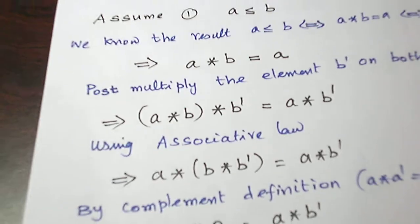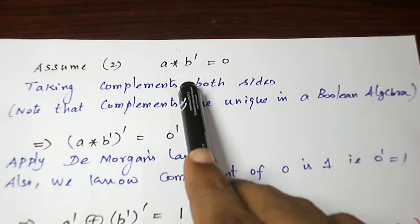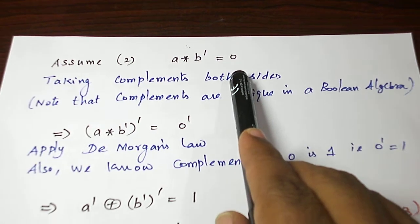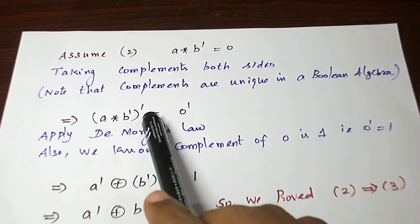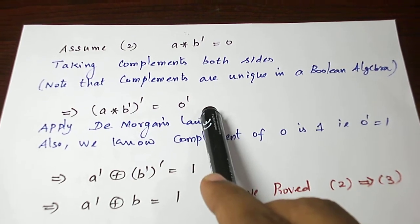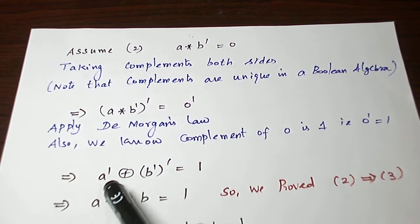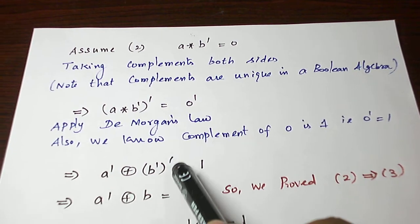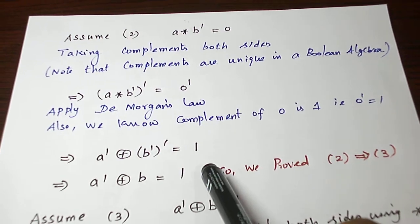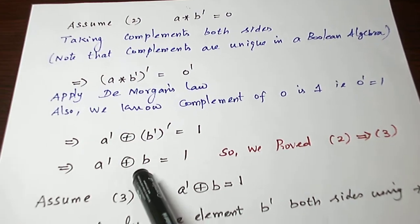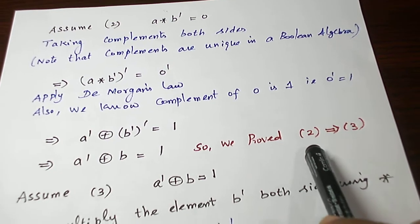Now let us take 2 implies 3. Assume A star B dash is equal to 0. Let us take the complement of both sides. The complement of A star B dash equals 0 complement. For the left-hand side, let us apply De Morgan's law: A dash plus B dash complement equals 0 complement, which is 1. So A dash plus B equals 1. So we have proved 2 implies 3.